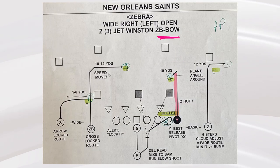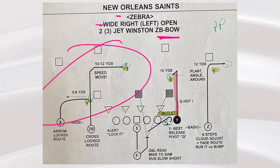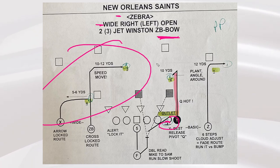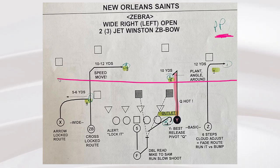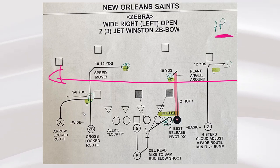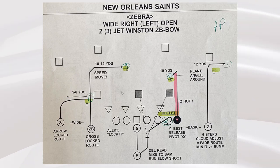Next one here, same thing — backside bow. Now going through the whole play: Zebra is the personnel, 11 personnel wide right. Open is the formation, wide right. Open sets the Y in a split four-yard split. Two jet is the protection. Winston is the front side concept — I think I have an X's and O's video on Winston. And then bow is the backside concept. Pure progression, one, two, three, four, all the way across. Full field read. How often do you really get to a backside arrow in a non-seven-on-seven setting? I don't know, but on paper it looks pretty good.